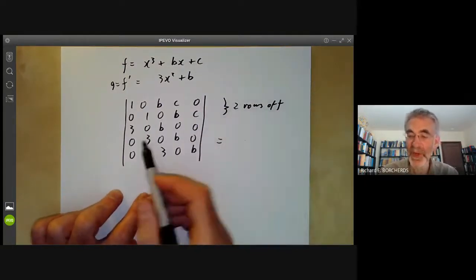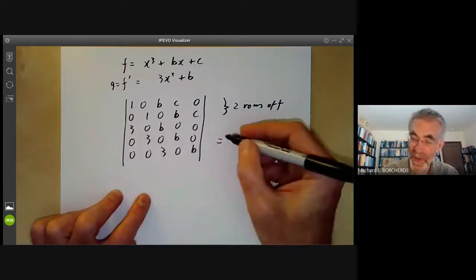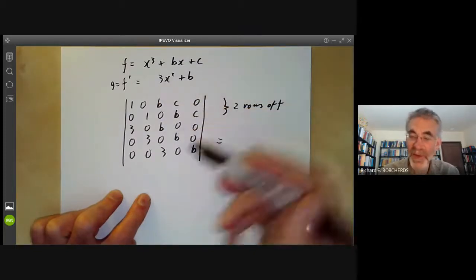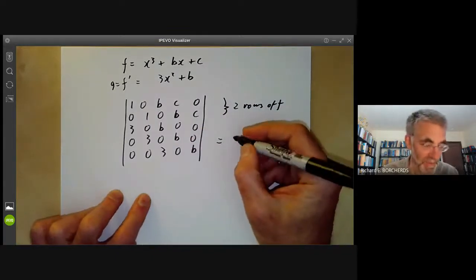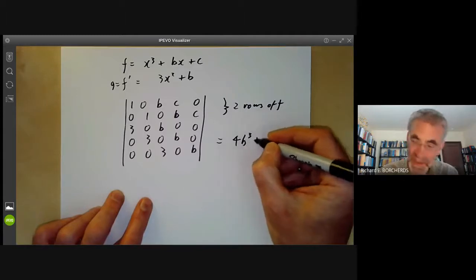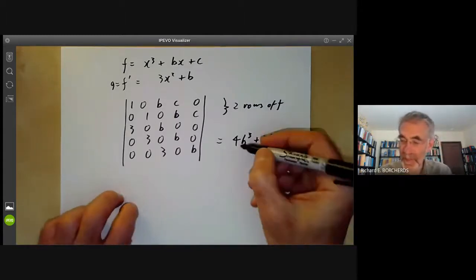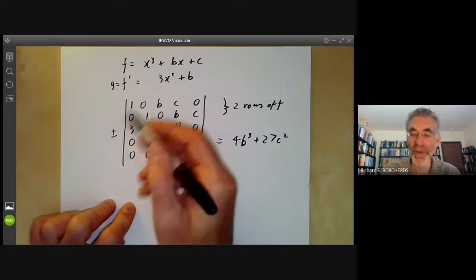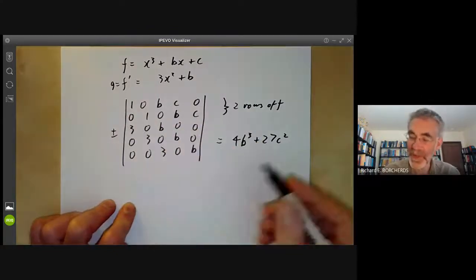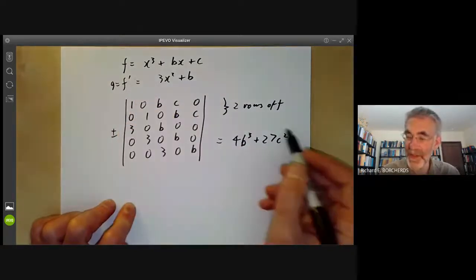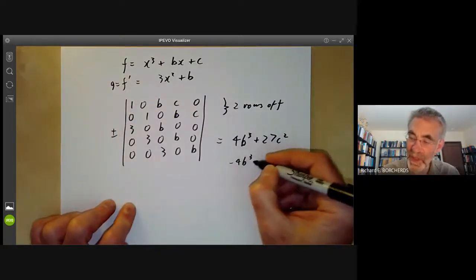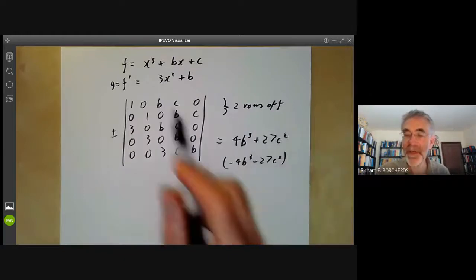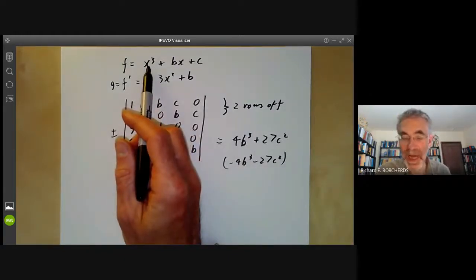And we want to know the determinant of this. And it's not terribly difficult to work out because it's got masses of zeros all over the place. So you can quite quickly subtract three times the first row from the third and three times the second row from the fourth and reduce to something that's easy to evaluate. And you find it's 4b cubed plus 27c squared. This isn't quite the discriminant of a cubic because the trouble with resultants is there's always a sign problem. You never quite know whether it should be plus 1 times this or minus 1 times this. And in fact, the discriminant of the cubic is in fact minus this expression. So it should be minus 4b cubed minus 27c squared. But anyway, the vanishing of this expression here is the condition for this polynomial to have a multiple root.